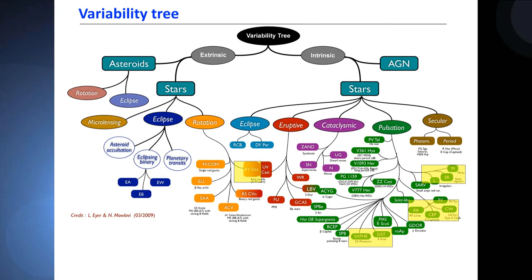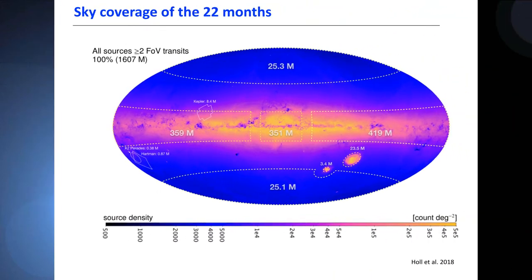Now if we look at the sky coverage for the DR2, it's taking 22 months. Obviously when you want to study variable stars, you need to have many measurements. This is a map of the two field of view transits. The more measurements you have, the better it is.